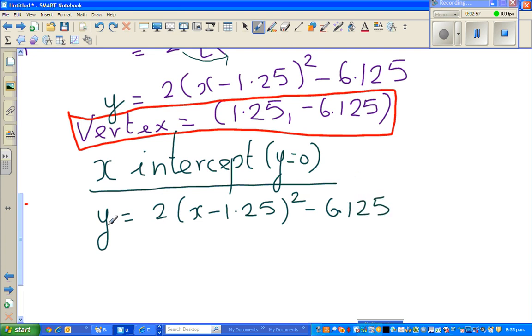Now the next step, I'm going to divide each of, I don't want this 2 sitting here. That is nagging me. Next step is, I'll write 0 is equal to 2 bracket x minus 1.25 squared minus 6.125.